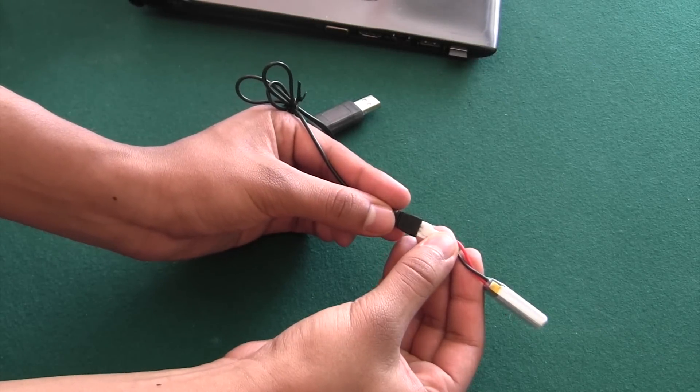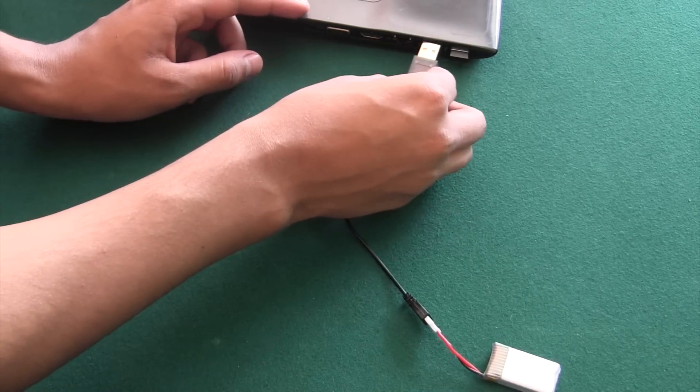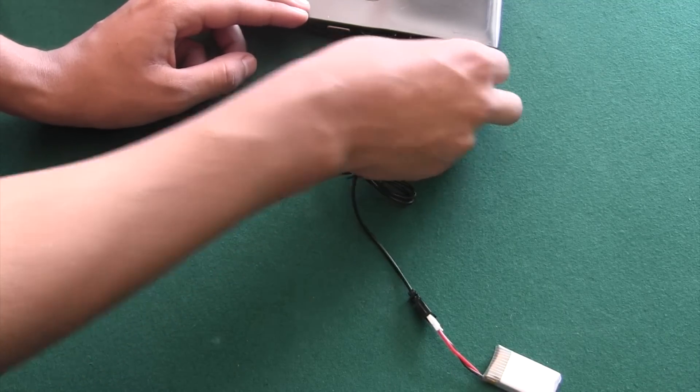We will start by charging the battery. Connect the small end of the USB adapter cable to the battery. The other end should be connected to a computer. The red LED light will turn on when charging and turn off when the battery is fully charged.